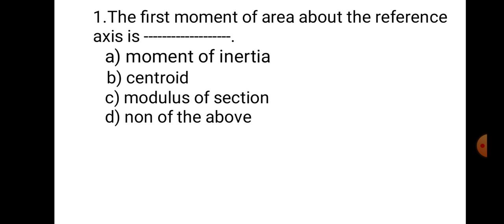Question number 1. The first moment of area about the reference axis is: A. Moment of inertia, B. Centroid, C. Modulus of section, and D. None of the above. In applied mechanics, when we have to calculate the centroid of the section, we take the moment of the area about the reference axis, and that is known as the first moment of area. Hence, the correct answer is B. Centroid.